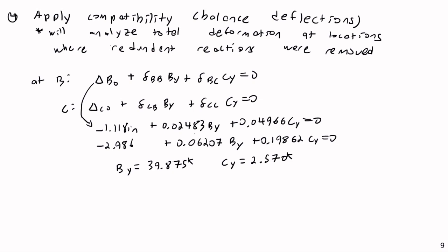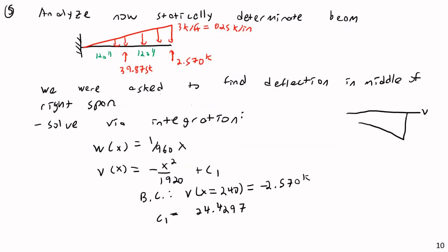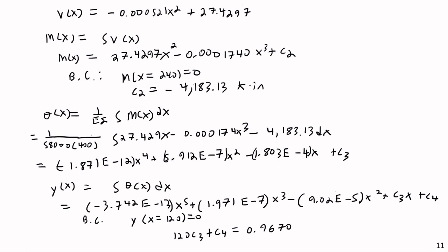If you had more than two redundants you would apply the exact same method — each additional redundant adds another secondary beam, another term to each compatibility equation, and another equation to the system. Past two redundants you'll definitely want to use a matrix. Alright, that'll do it for today — thank you for watching, and let me know if you have any questions.